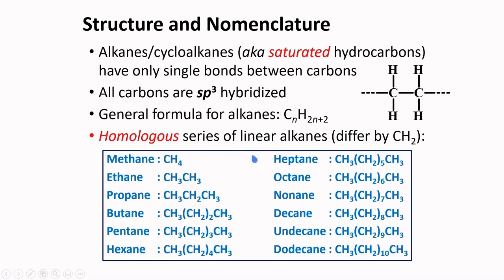The homologous series includes: methane for 1 carbon, ethane for 2 carbons, propane for 3 carbons, butane, pentane, hexane, heptane, octane, nonane, decane for 10 carbons, undecane for 11 carbons, and dodecane for 12 carbons, among others.